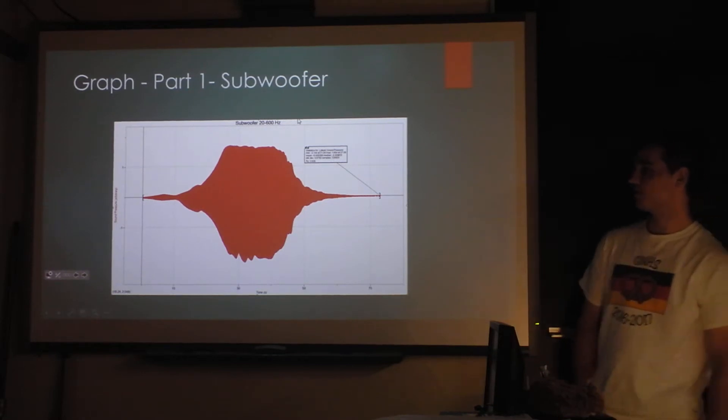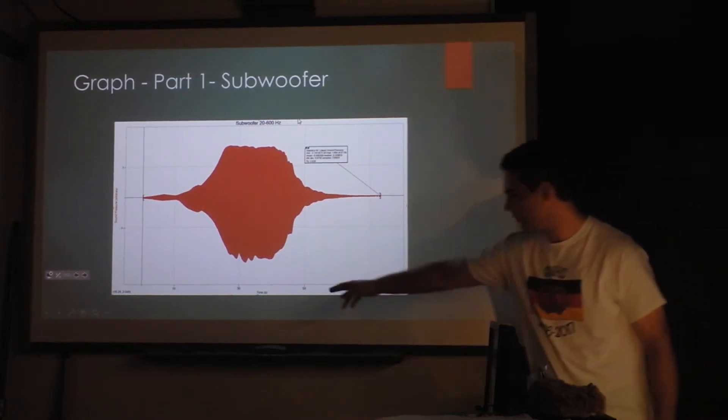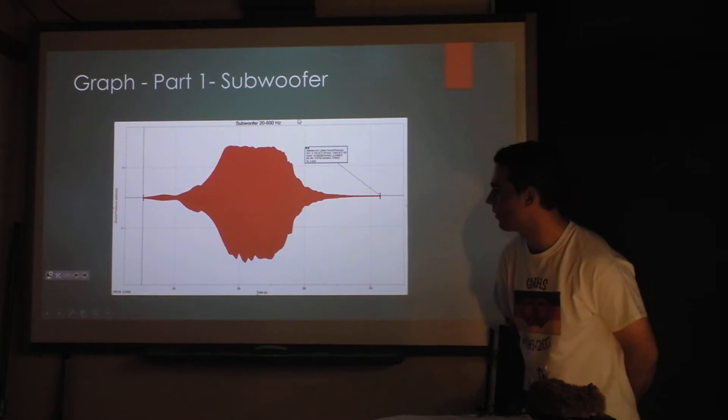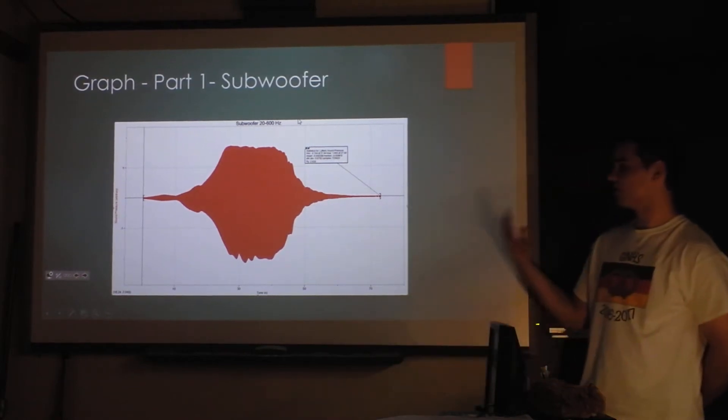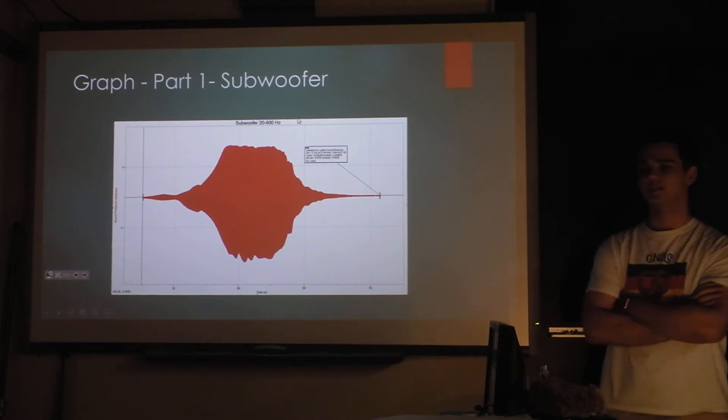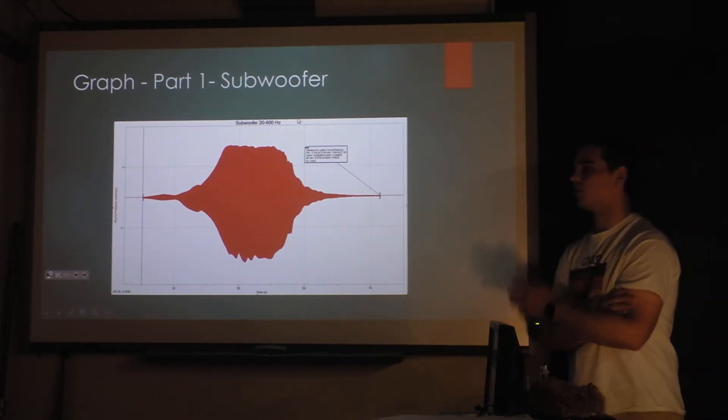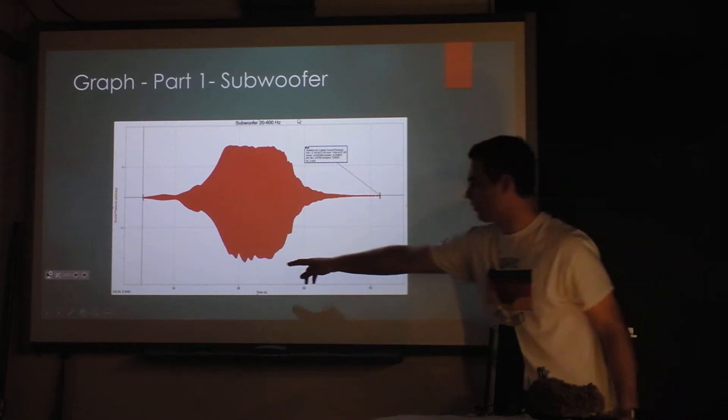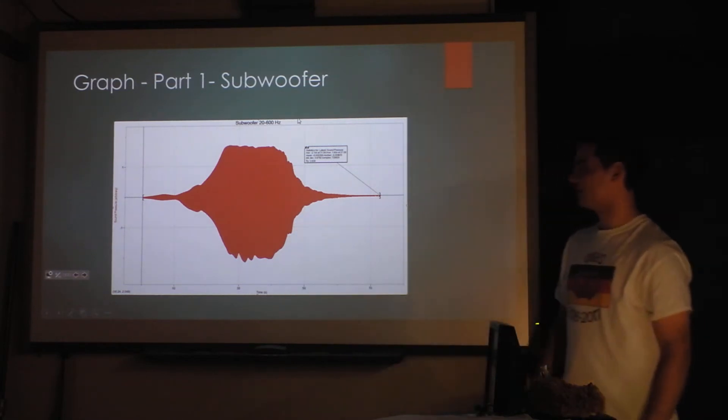So here's the graph for part one of the subwoofer. This is the frequency sweep. Down here is the time. So around 10 seconds, it started picking up. And 10 seconds was like 60 hertz. I'll show you that later. It was pretty low. And then it would pick up, peaked for a little while, and then dropped around 50 seconds.